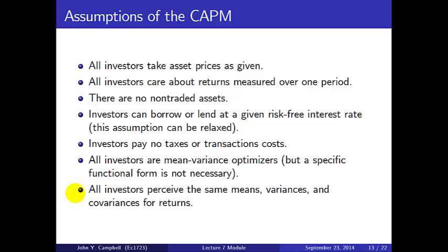What does this long list of assumptions give us? It essentially implies that all investors are looking at the same mean standard deviation diagram and aiming to find the highest available Sharpe ratio. They're going to be able to do that by trading freely in assets. This delivers a certain homogeneity or sameness among investors, which is then going to give us the key results of the CAPM.